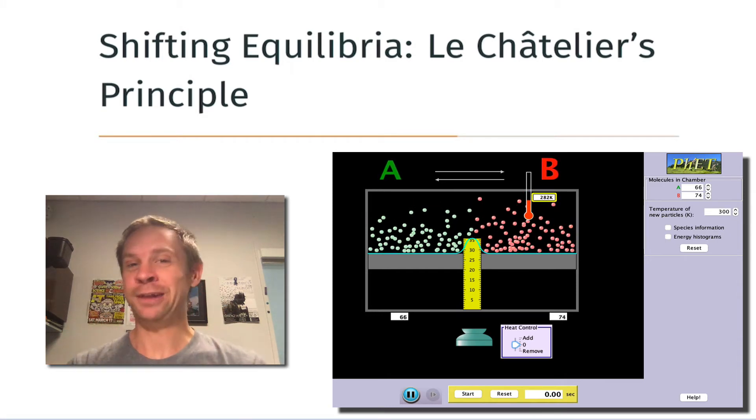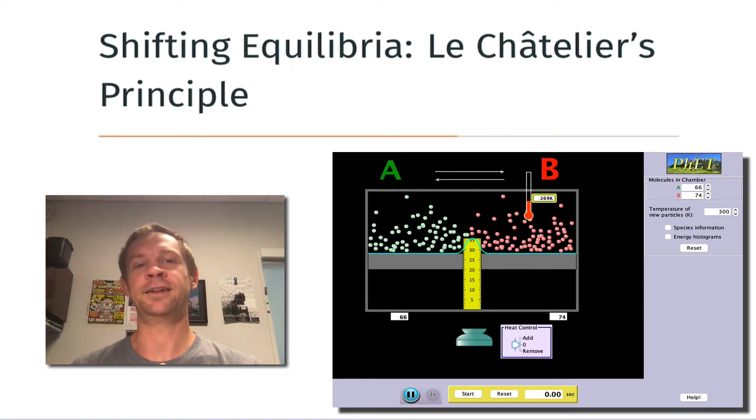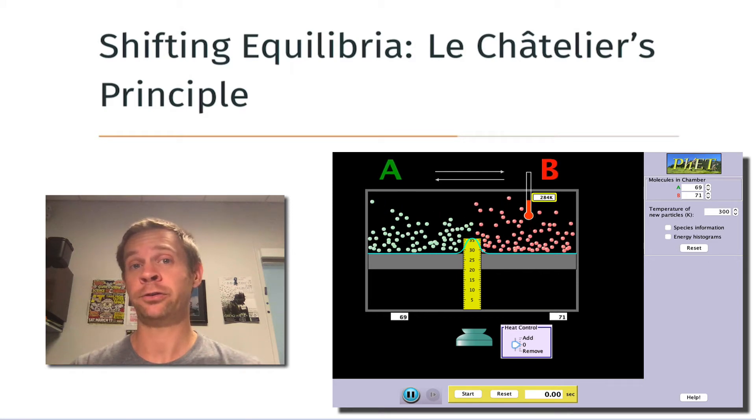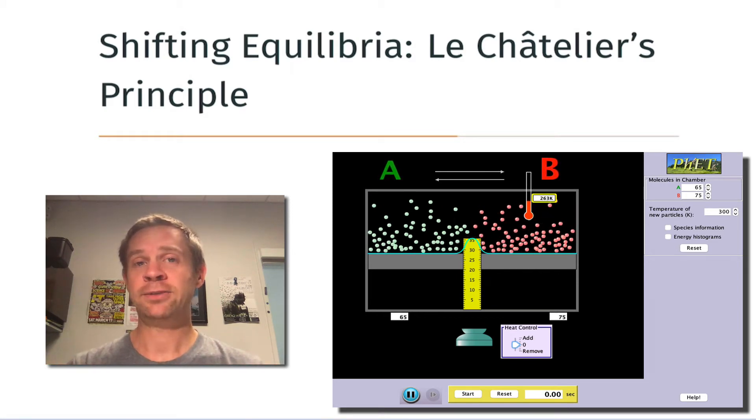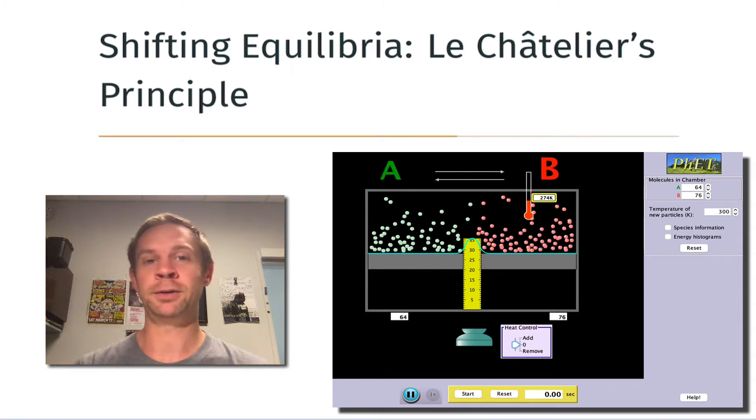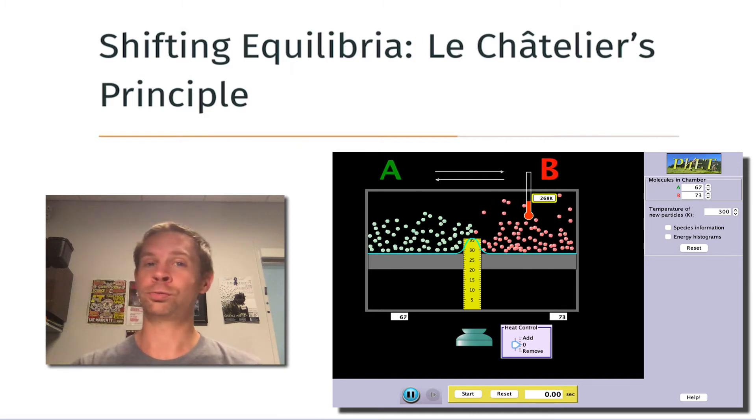Thankfully, chemical equilibrium is dynamic. The entire ability to do any of this relies on the fact that the reaction rates of the forward and reverse reactions remain non-zero, even in chemical equilibrium. This means if we knock the system out of equilibrium, it will respond by moving either in the forward or reverse direction.